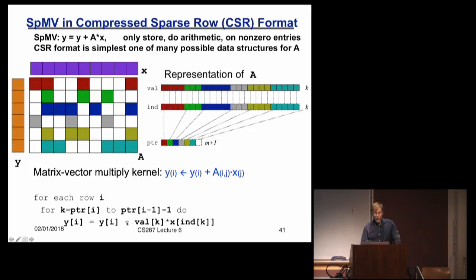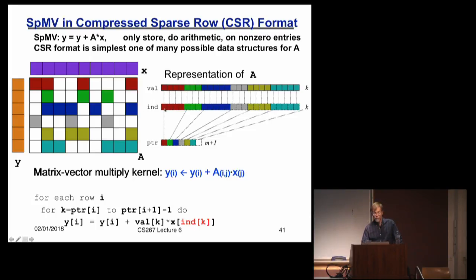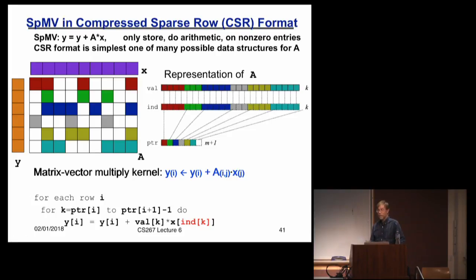I iterate and get the value of the matrix from the value array. But now I have to do something nastier than usual — I need indirect addressing, because I have to look up a number from the index array and use that as a subscript to go to the x array to figure out where it is. This indirection is what makes this much less predictable and much harder to parallelize than standard dense matrix-vector multiply, because I don't know where it is until I get there.